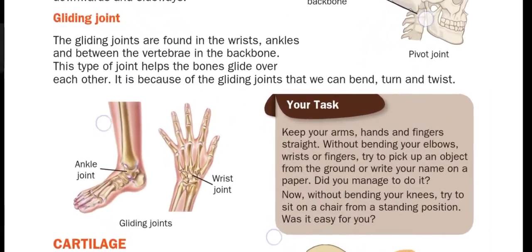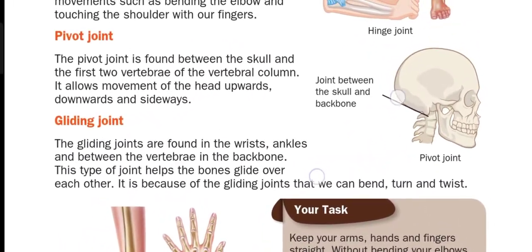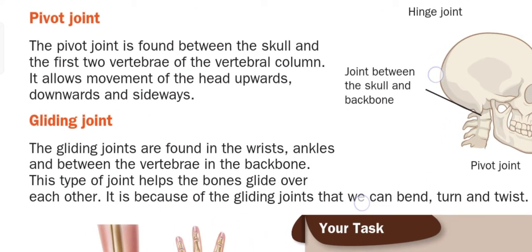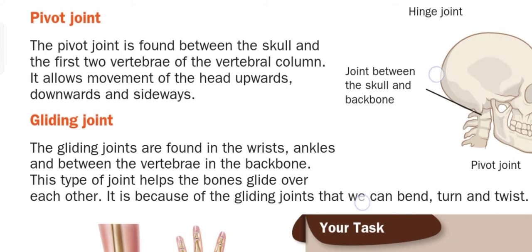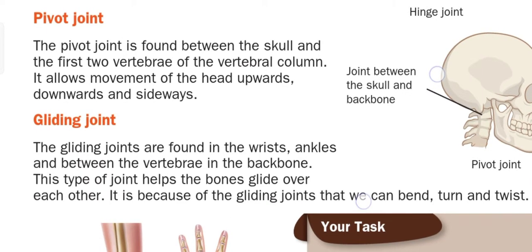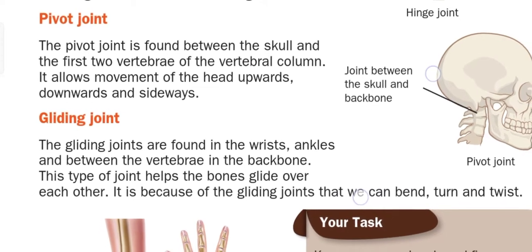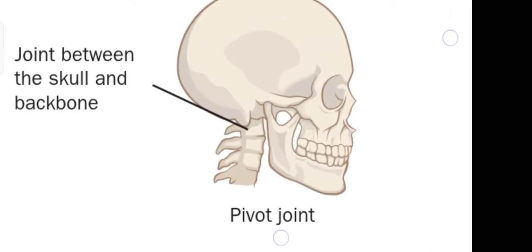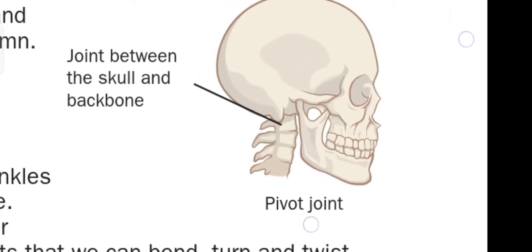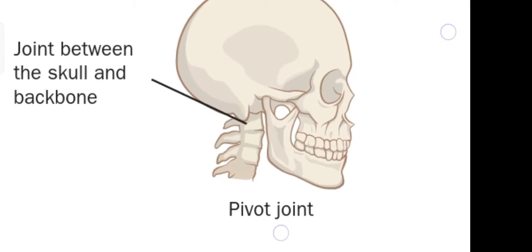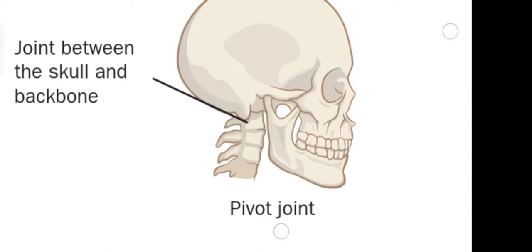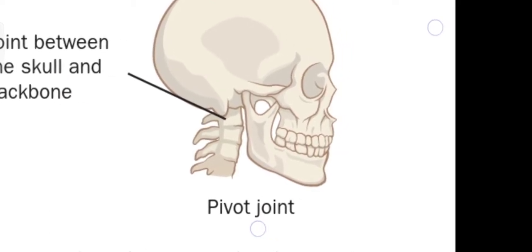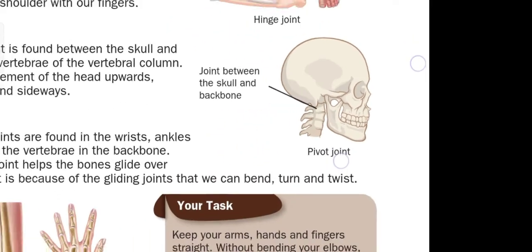Now let's see the pivot joint. The pivot joint is found between the skull and the first two vertebrae of the vertebral column. It allows movement of the head upward, downward, and sideways — so our head can move in every direction with the help of this joint.